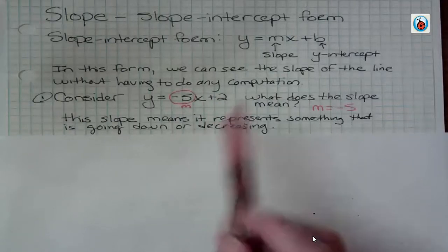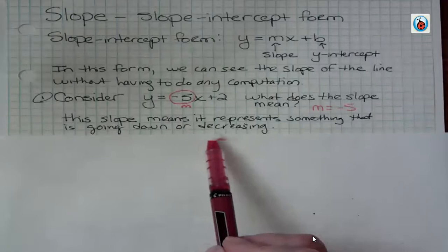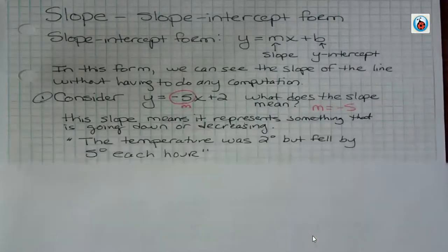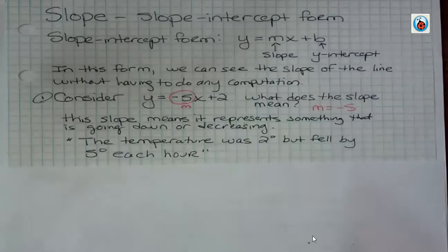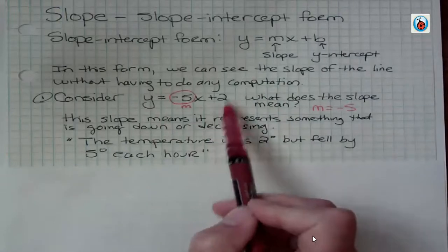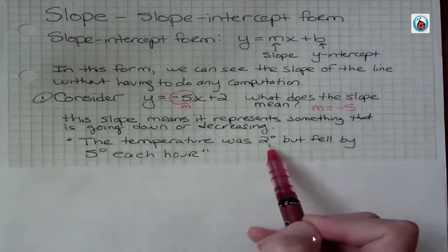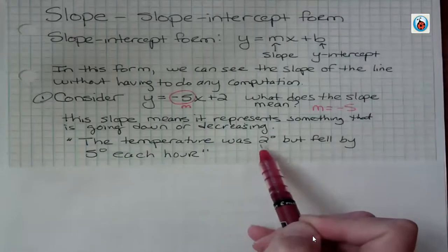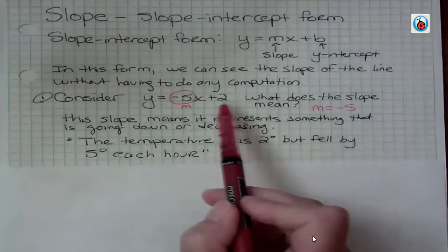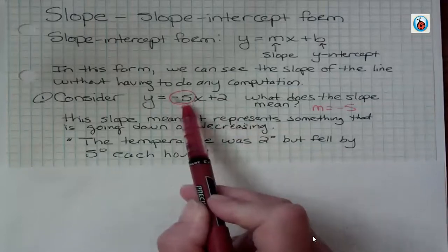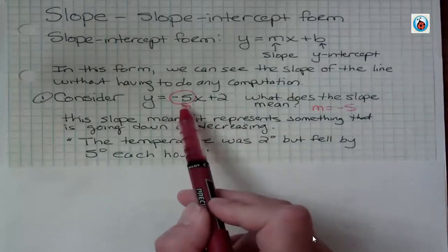Function is just another term we can use when we talk about linear equations. We have something that's going down. So I could say for this equation, like, what does this mean? Well, remember, b is the y-intercept or the starting point, so I could say the temperature was 2 degrees but fell by 5 degrees each hour. It started off at 2, that's the starting point, and then it fell because it's negative.